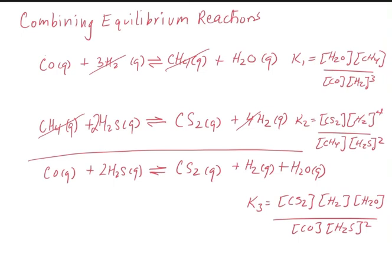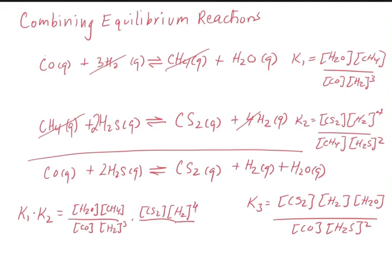So what you'll notice is that if we take K1 and K2 and we multiply them together, these will factor out to give us the exact same expression as K3. So if we do the following, if we take K1 times K2, that's going to equal the concentration of H2O times the concentration of CH4 divided by the concentration of CO times the concentration of H2 cubed times the concentration of CS2 times the concentration of H2 to the fourth divided by the concentration of CH4 times the concentration of H2S squared. And so if we multiply these together and we start to cancel things out, this just becomes a one, what we wind up getting is we wind up getting K3. We get H2O times CS2 times H2 divided by CO times H2S squared.